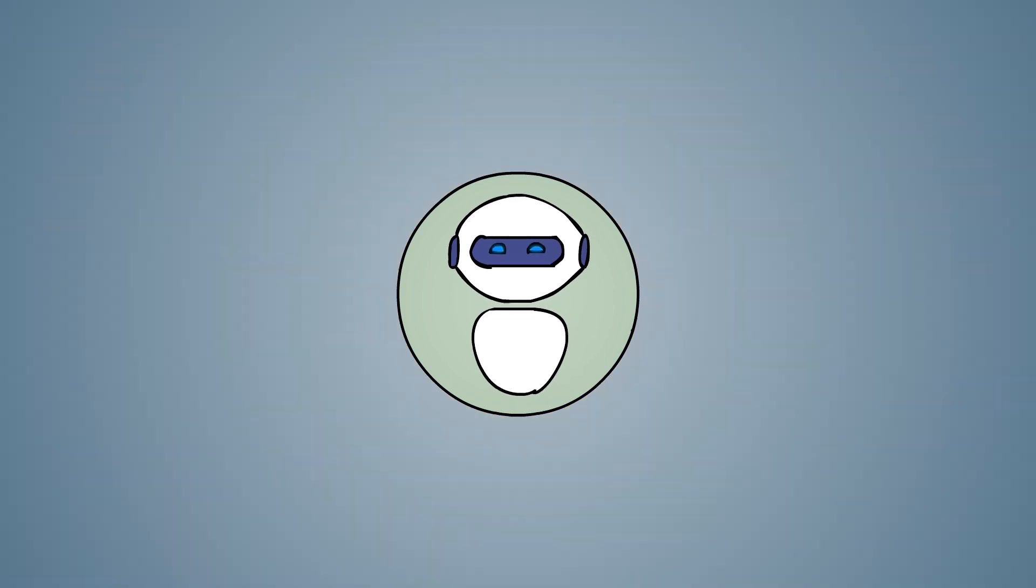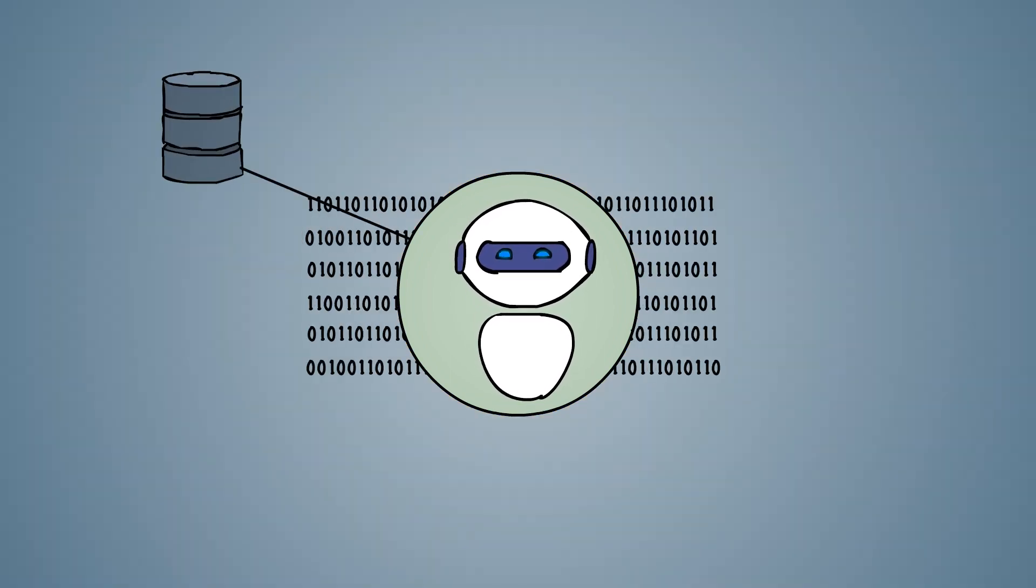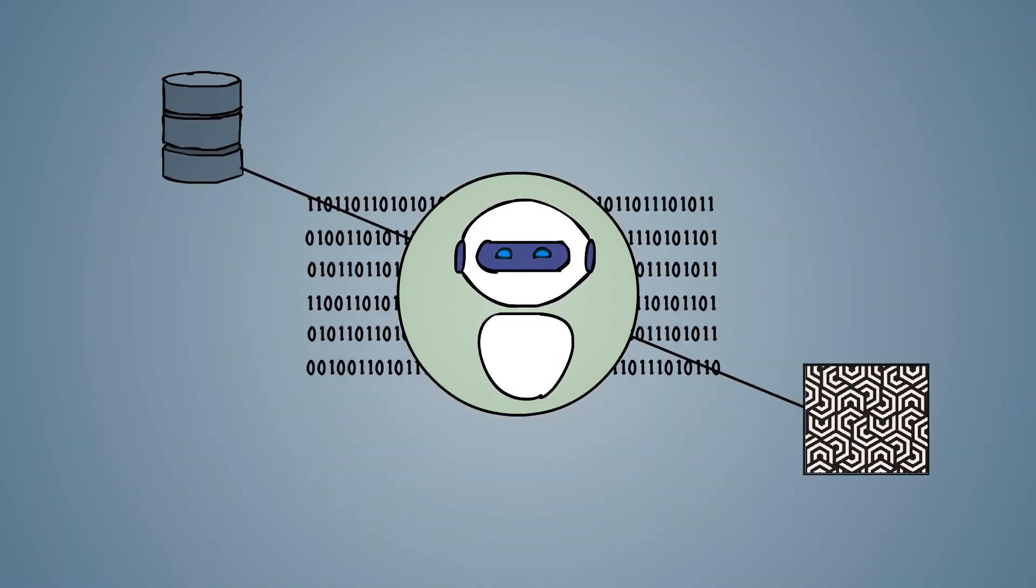Machine learning systems are algorithms that can learn from data, identify patterns, and make decisions with minimal or no human intervention.